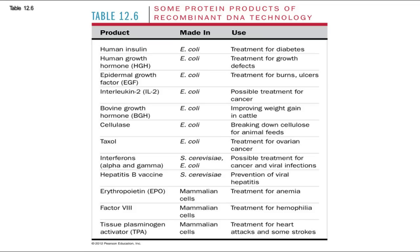Here are some examples of recombinant DNA protein products. Human insulin and growth hormone are very commonly made by E. coli bacteria that have been engineered to produce them.